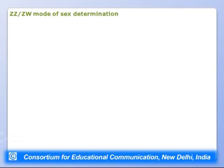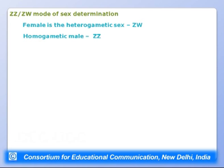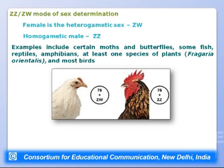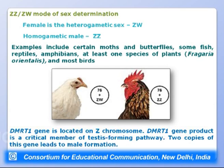Another mode of sex determination found mainly in birds is the ZZ/ZW system. Birds do not have X and Y chromosomes; instead they are designated Z and W. In this system, the female is the heterogametic sex with ZW constitution, while the male is the homogametic sex with ZZ constitution. Examples include certain moths, butterflies, some fish, reptiles, amphibians, at least one plant species, and most birds.